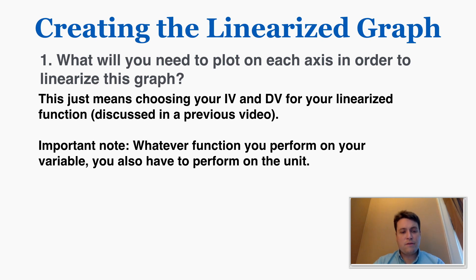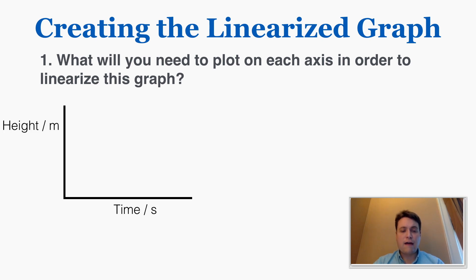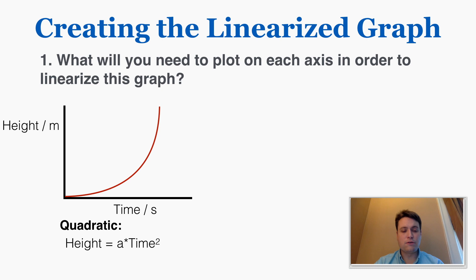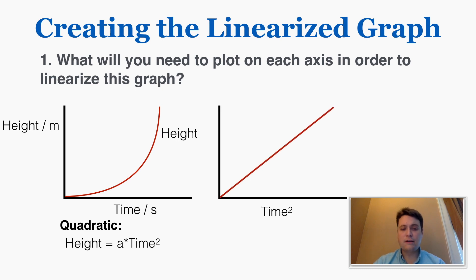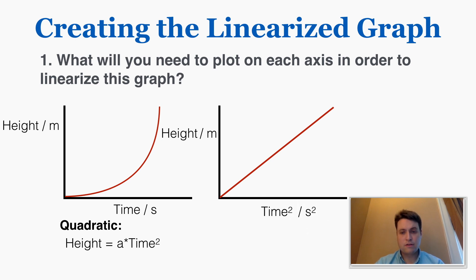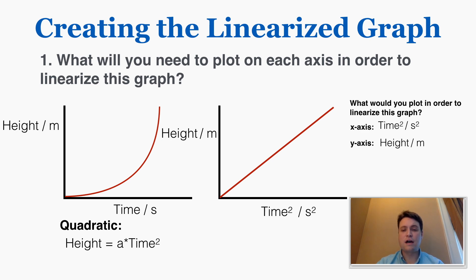Just as an example, if you have a clearly quadratic graph, you know based on the rules for quadratic functions that the height of this graph is going to be equal to some constant a times time squared. To linearize this, you're going to graph height on the y-axis and time squared on the x-axis, and that will produce a linear line. The new units are still meters on the y-axis, and seconds squared on the x-axis. So on a lab report: x-axis is time squared (seconds squared), y-axis is height (meters).